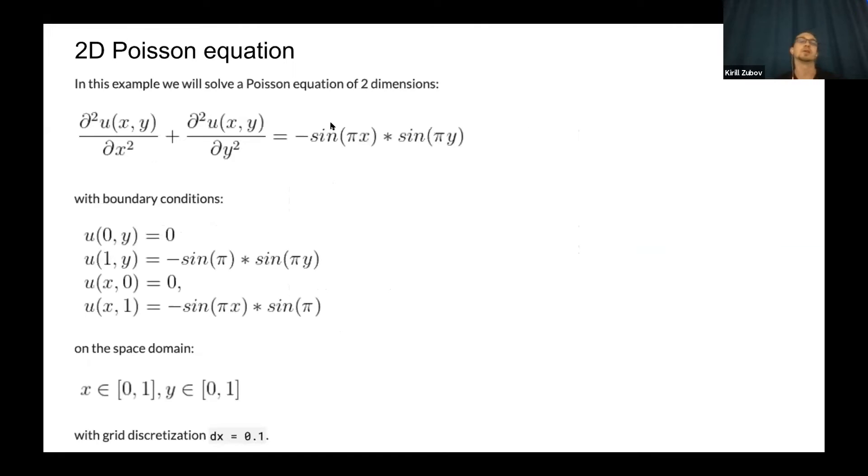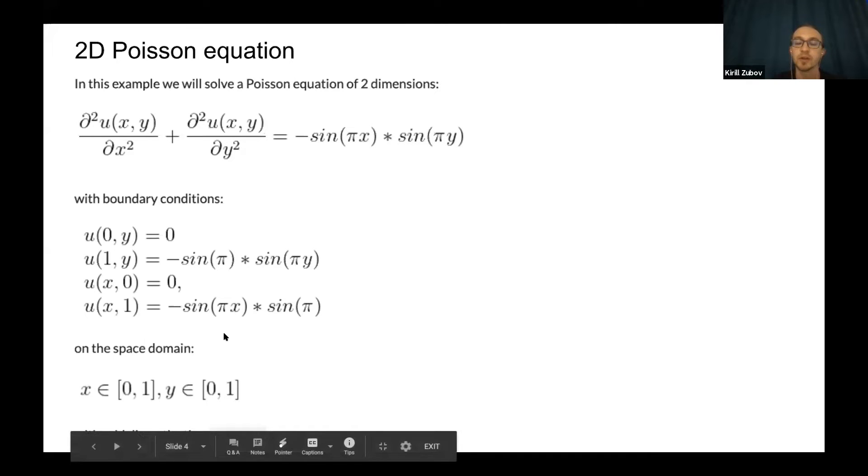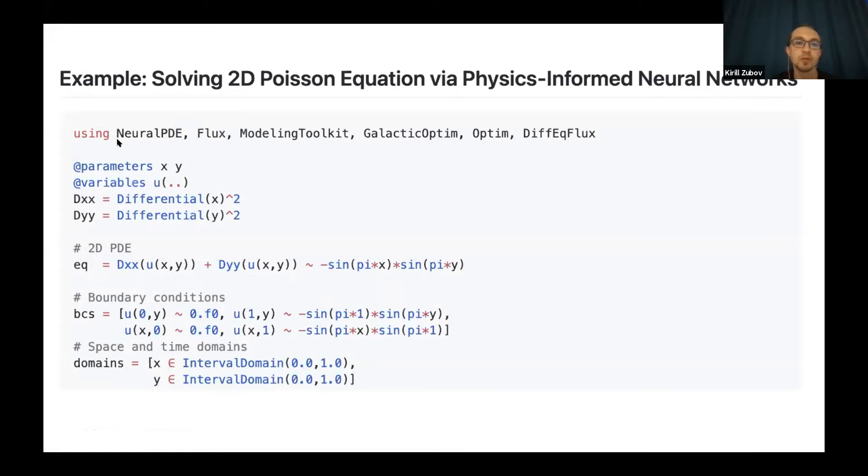So let's go to the code and let's try to show a two-dimensional Poisson equation. This equation, this line, with some boundary condition and some space domain with X and Y. And the code for this equation will look like this. This is a modeling toolkit representation, some symbolic representations using in SciML. And the idea that we have some universal symbolic representation for all the methods that exist in SciML.